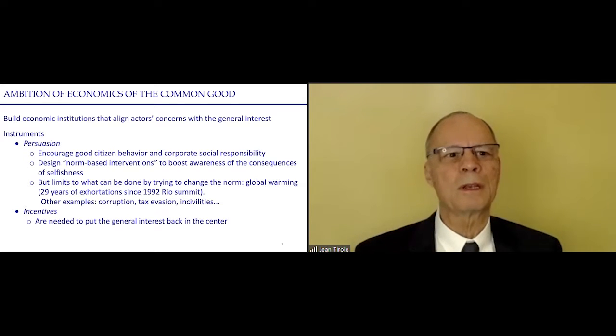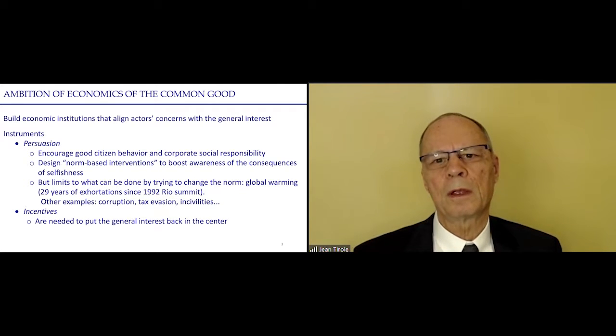The ambition of Economics for the Common Good is to align the actor's interest with the general interest. There are two instruments to do that. The first instrument is persuasion. We want to encourage citizens, for example, to engage in good behavior. Corporate social responsibility for firms. To that purpose, we may design norm-based interventions, which means that we try to boost awareness about the consequences of selfishness.